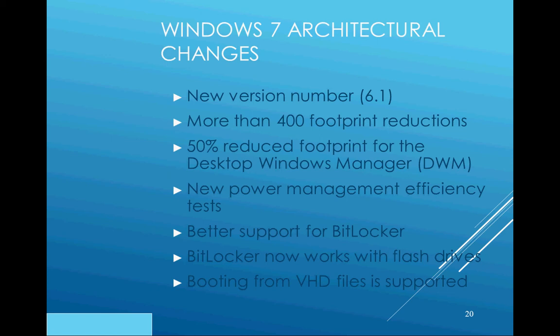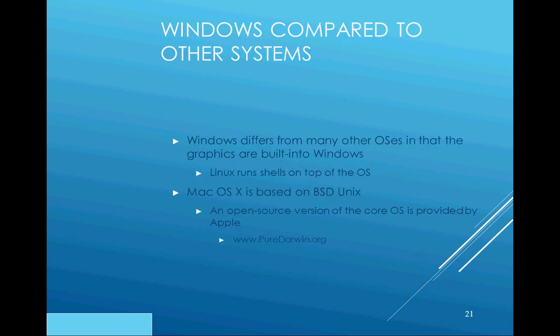Comparing Windows with other operating systems: Linux is more like Windows 3.1 in that the operating system is separate from the graphical interface — on Linux you can swap out the graphical interface for many different versions. In Windows, graphics are built right into the operating system. Mac OS is based on the BSD Linux or Unix distribution, and you can find out more at www.puredarwin.org.